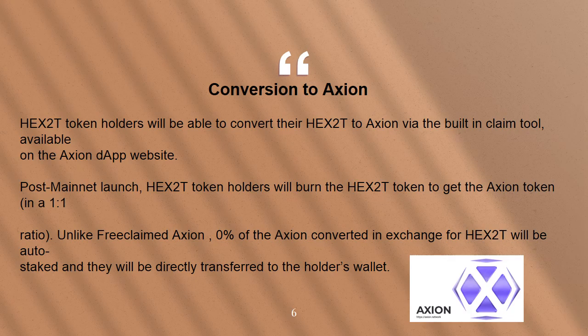HEX 2T token holders will be able to convert their HEX 2T to Axion via the built-in claim tool, available on the Axion DApp website. Post mainnet launch, HEX 2T token holders will burn the HEX 2T token to receive the Axion token in a 1-to-1 ratio. Unlike free claimed Axion, 0% of the Axion converted in exchange for HEX 2T will be auto-staked — they will be directly transferred to the holder's wallet.